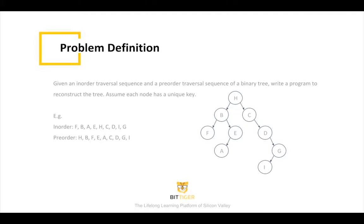Assume each node has a unique key. For example, given an in-order sequence of F, B, A, E, H, C, D, I, G, and a pre-order sequence of H, B, F, E, A, C, D, G, I, we can reconstruct the binary tree as the graph on the right.